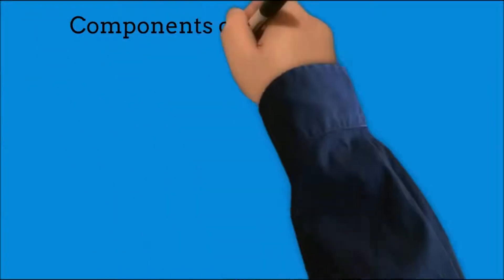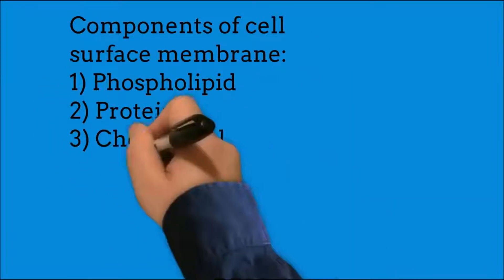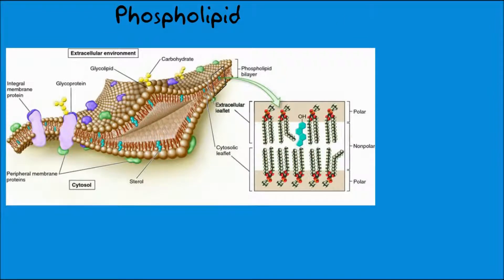Now let's see what are the components of the cell surface membrane. They are composed of phospholipids, proteins, cholesterol, glycolipids, and glycoproteins. Looking at phospholipids: each molecule is composed of a head and two tails. The head is the phosphate group, which is polar in character, and the tails are non-polar.